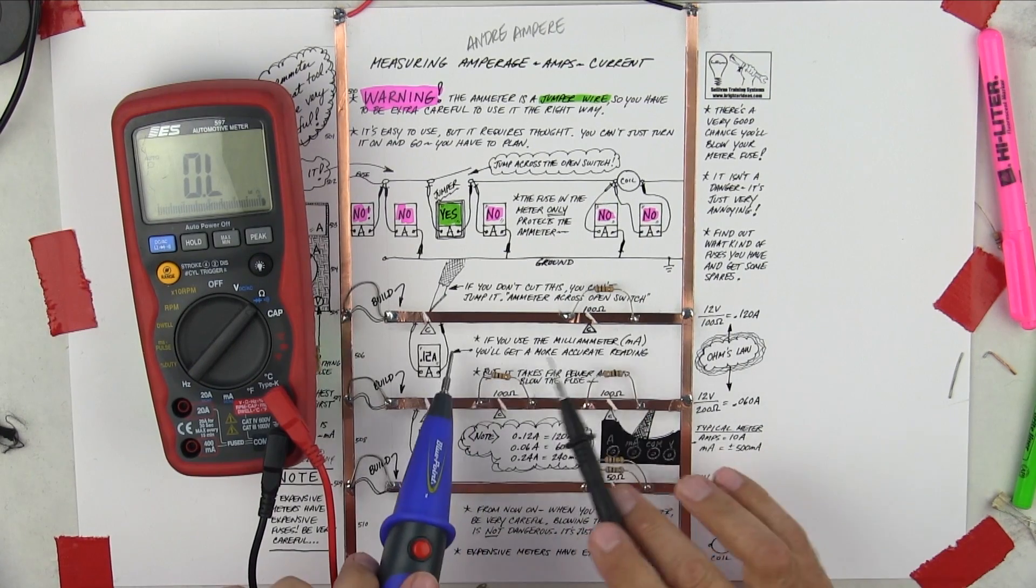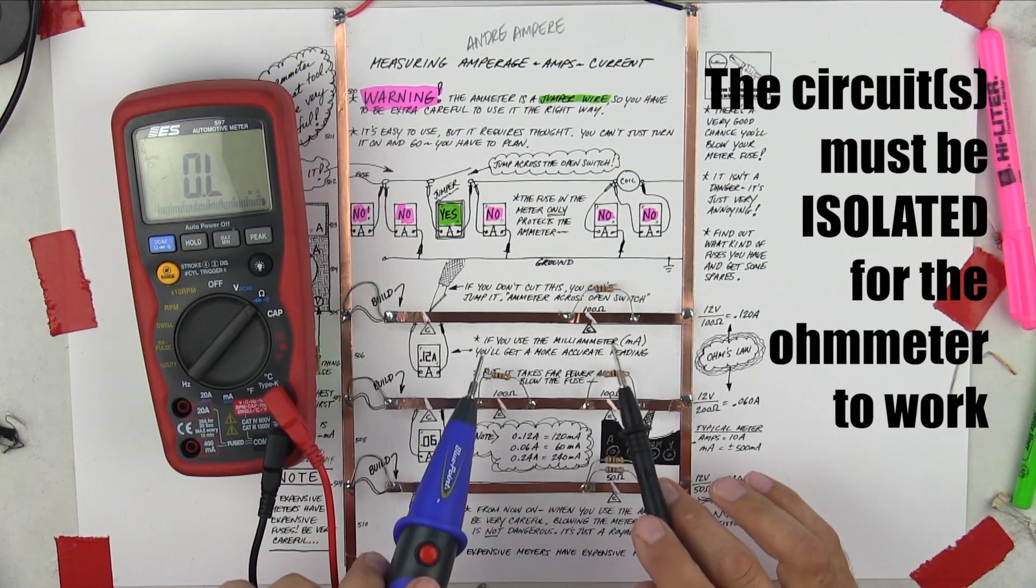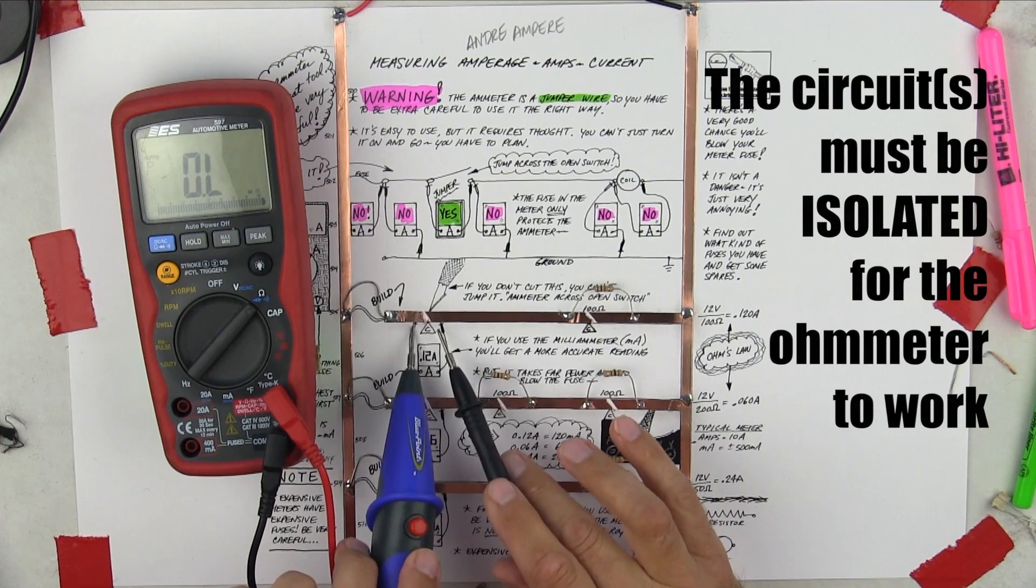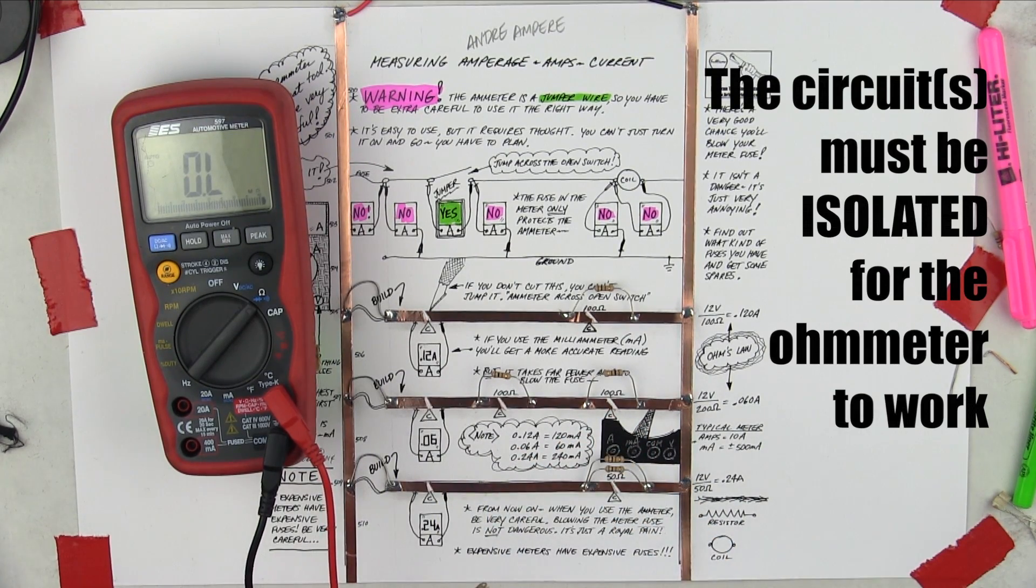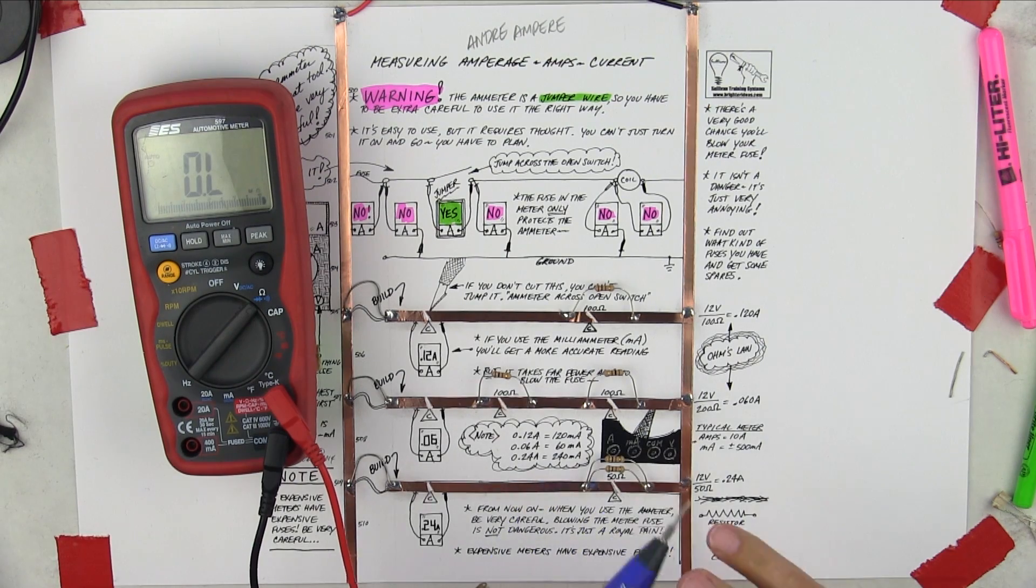So I don't have any problem using the ohm meter here. That's one of the problems with the ohm meter is that people are not always sure that this circuit is isolated. So if you're working on vehicles or equipment, the ohm meter is not dangerous because it will hurt things. The ohm meter is dangerous because you may not get a right answer.